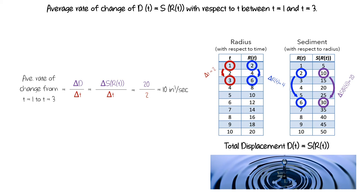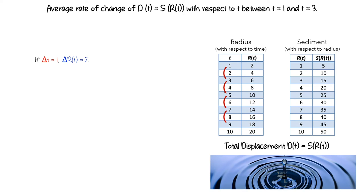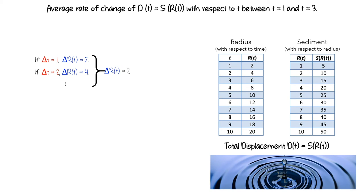But there is another way we can think about this problem. If we look at the first table, each time t changes by one second, the radius changes by two inches — from two to four to six and so on. So when delta t equals one, delta r equals two. Similarly, if we look at amounts of change in time of two seconds — when t changes from one to three to five — the corresponding radii change by four inches, so when delta t equals two, delta r equals four. We could continue doing this and we would see that delta r is always twice as large as delta t, which we can describe as r of t varies two times as much as the variation in t.